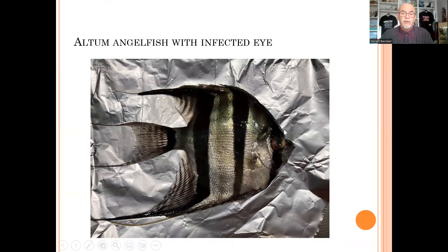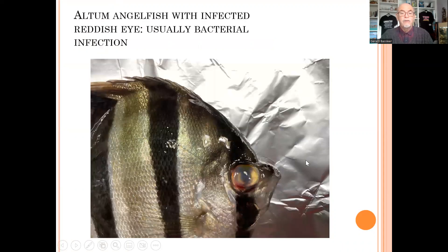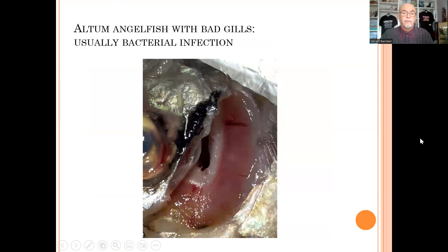We can see that this angelfish had a very badly infected eye — enlarged with fluid and reddish. In a better picture, we can see the reddish eye, the fluid, and the inside is cloudy. Usually in most cases this is a bacterial infection. When I received a picture of the gills, you could see red streaks inside and discoloration — this is not a normal gill; it is usually a bacterially infected gill.